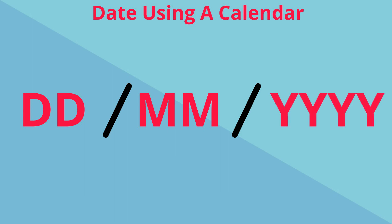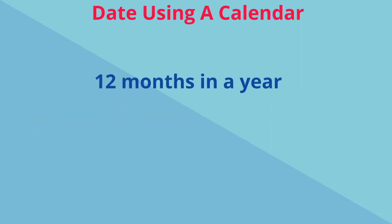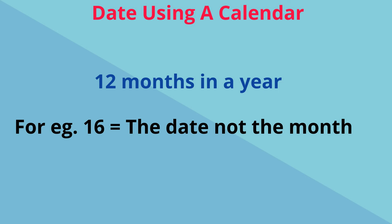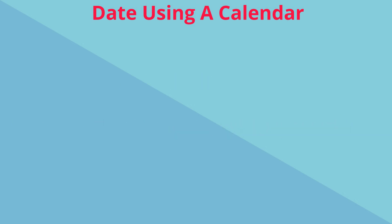A quick tip: don't forget that there are 12 months in a year. So if a number, for example, is 16, we know that's the date and not the month, because we can't have a month greater than 12. We can use a calendar to answer many different questions about dates, days, months, and years.